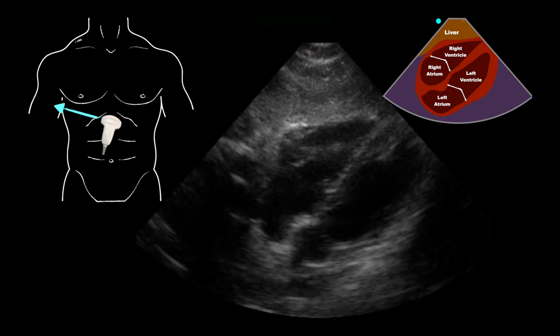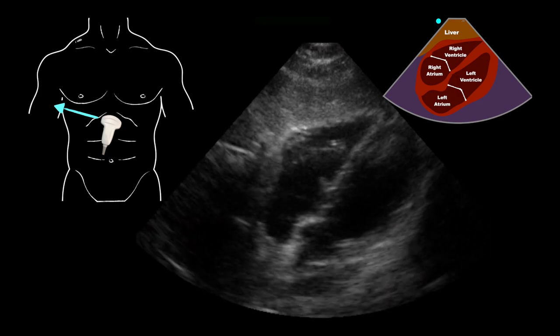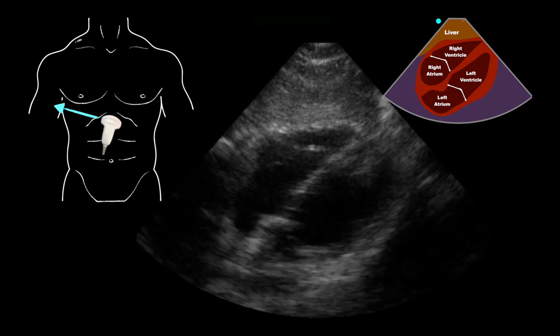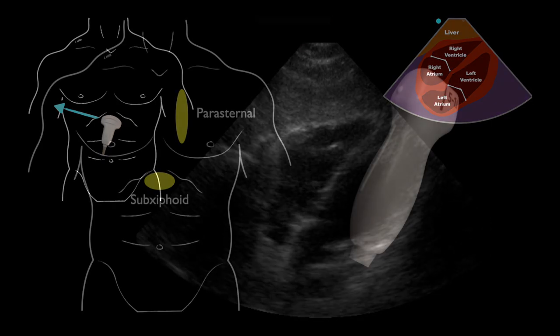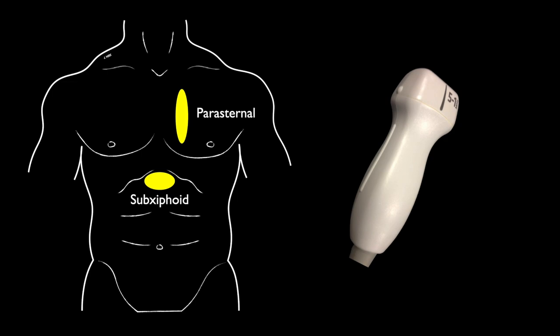We can see the inner walls of the left ventricle close down well — this is a normal appearing ejection fraction. If you want to learn more about cardiac ultrasound, a link is included in the corner. If the sub-xiphoid view is not obtainable, we do have the option of doing a parasternal view, and I'd recommend switching to a phased array probe. I'd typically save that until after finishing the rest of the abdomen, as changing probes takes about 30 seconds each time.